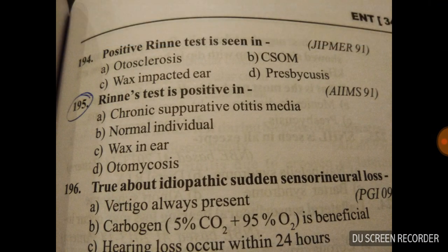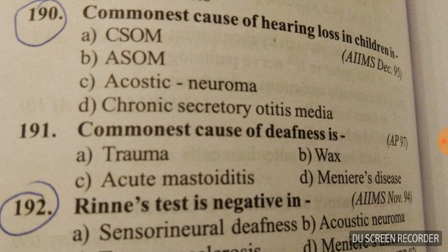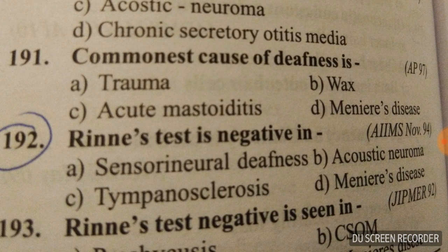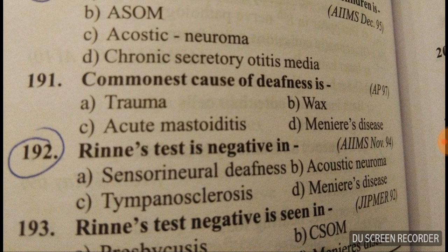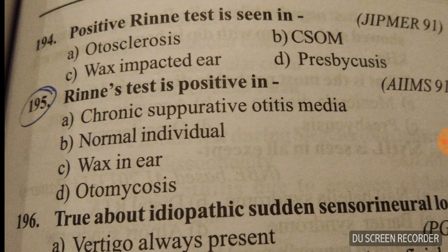Question number 190: the commonest cause of hearing loss in children is chronic secretory otitis media. Option D is the answer. Question number 192: Rinne's test is negative in tympanosclerosis. Rinne's test is positive in a normal individual.